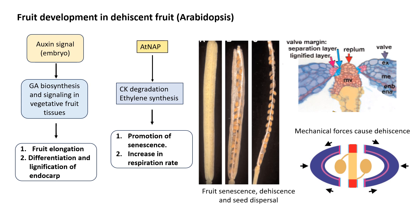Along with induction of senescence, the formation of the dehiscence zone is activated. Transcription factors like SHATTERPROOF, FRUITFULL, INDEHISCENT, and REPLUMLESS, which regulate pistil development even before fertilization, are involved in further differentiation of the valve margins to form narrow files of lignified cells and a layer of small separation cells which forms the dehiscence zone. The separation cell layer defines a longitudinal plane of rupture at both sides of the replum. The valve internal layer, that is the endocarp, is also lignified, and when the mature fruit dries, it provides mechanical tensions that facilitate pod opening causing the seeds to disperse.